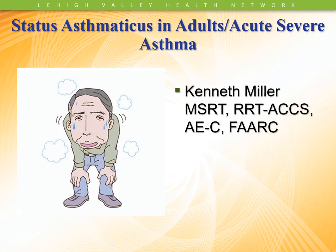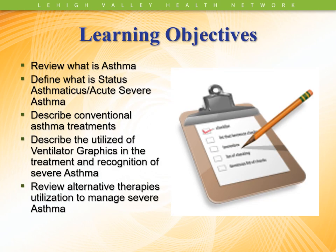Welcome everybody. This is Kenny Miller again. Today I'm going to talk about status asthmaticus in the adult patient with acute severe asthma. Our learning objectives are to review what is asthma, define what is status asthmaticus and acute severe asthma, describe some of the conventional asthma treatments, describe the utilization of ventilator graphics in the treatment and recognition of severe asthma, and then we'll talk about some rescue alternative therapies utilized to manage severe asthma.